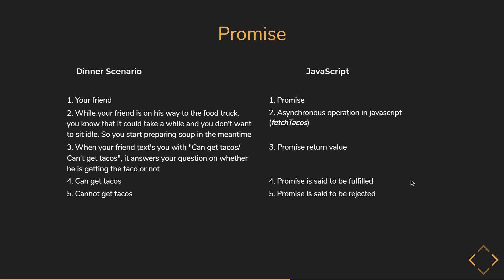If the promise is fulfilled, you can set up the dining table — this is a success callback, or in other words, the callback function that gets executed when the promise resolved successfully. If the promise is rejected, you can cook some pasta — this is the failure callback, or in other words, the callback function that gets executed when the promise failed to resolve and was rejected instead.